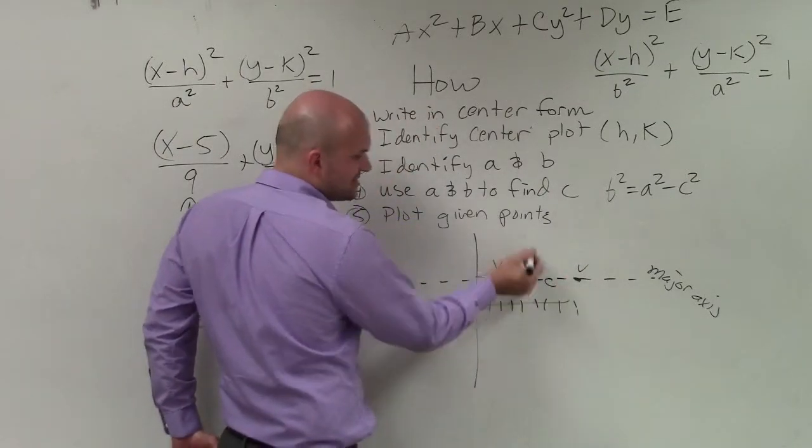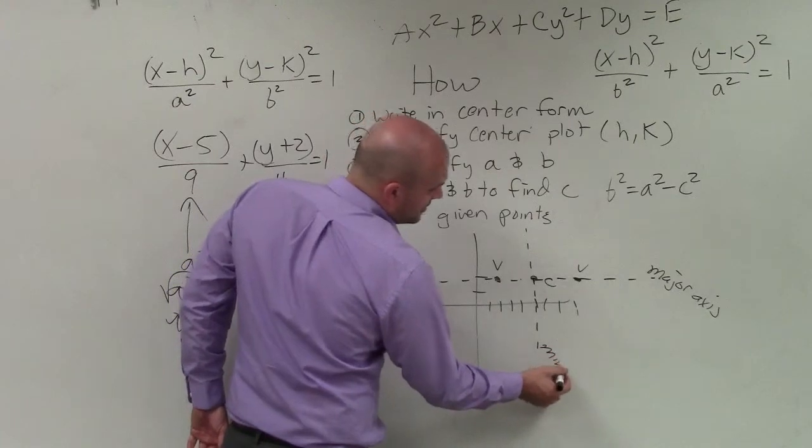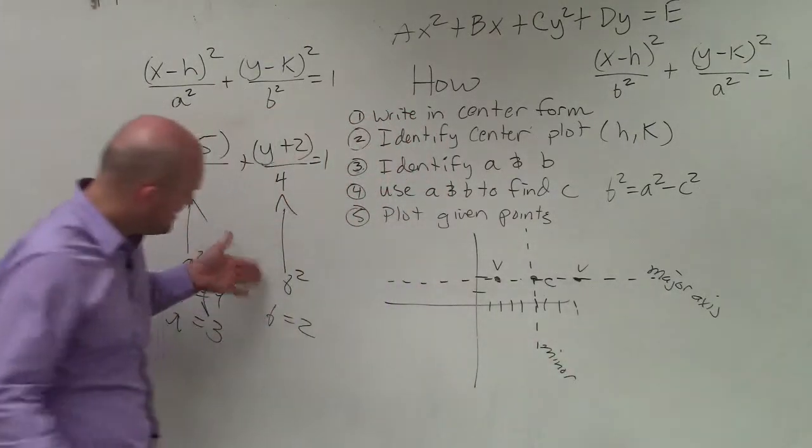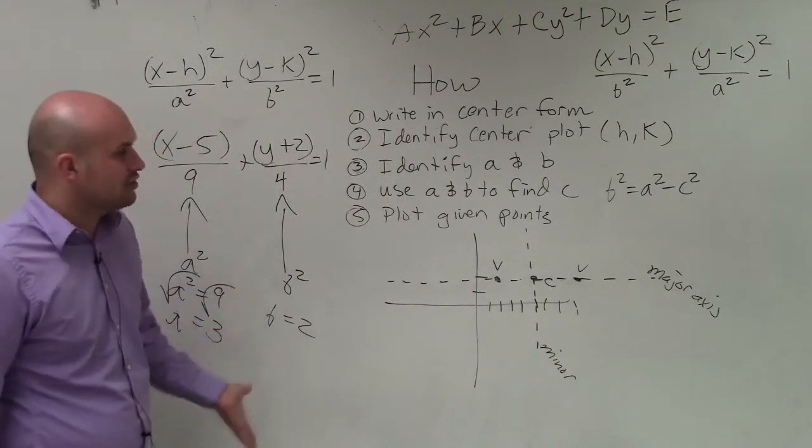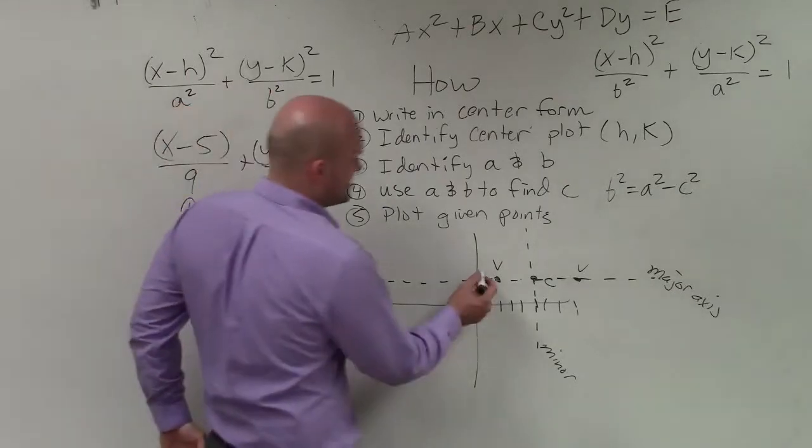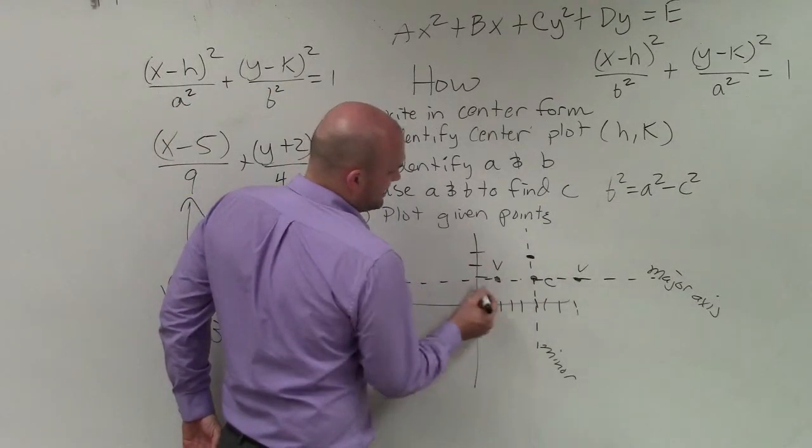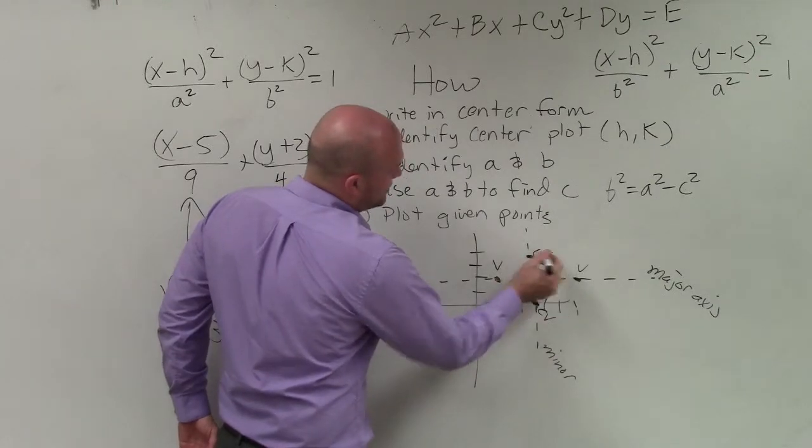Now, the major axis and the minor axis are perpendicular. So once I know my value of b, that's going to be my co-vertices. Those are going to be up and down on my minor axis, which would be up 2 units and down 2 units. And those are what we call my co-vertices.